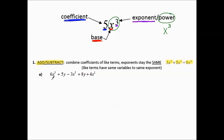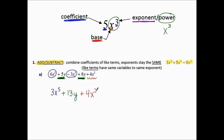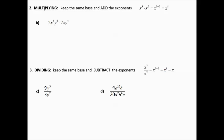Let's take a look at this example. Which are the like terms? This one is an x to the fifth, and this one is an x to the fifth, so we can combine these. 6x to the fifth minus 3x to the fifth makes 3x to the fifth, because those are 6 minus 3 for the coefficients. We also have like terms: the positive 5y and the positive 8y — same variable, same exponent of invisible 1. 5 plus 8 for the coefficients makes 13, so positive 13y. Notice we also have a 4x squared, but this x is not like the others because it has a different exponent, so it stays as positive 4x squared.